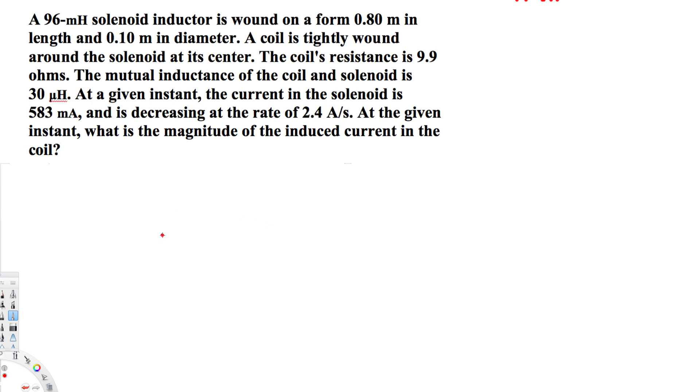What's going on guys, let's look at this problem right here. This question is asking: a 96 millihenry solenoid inductor is wound on a form 0.8 meter in length and 0.1 meter in diameter. A coil is tightly wound around the solenoid at its center. The coil's resistance is 9.9 ohms. The mutual induction of the coil and solenoid is...